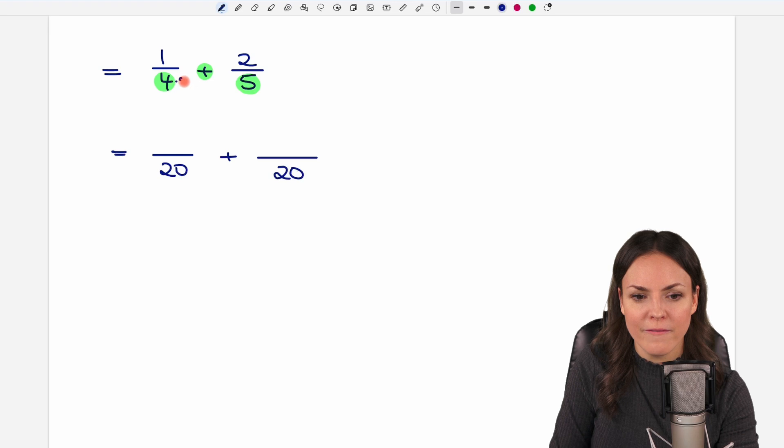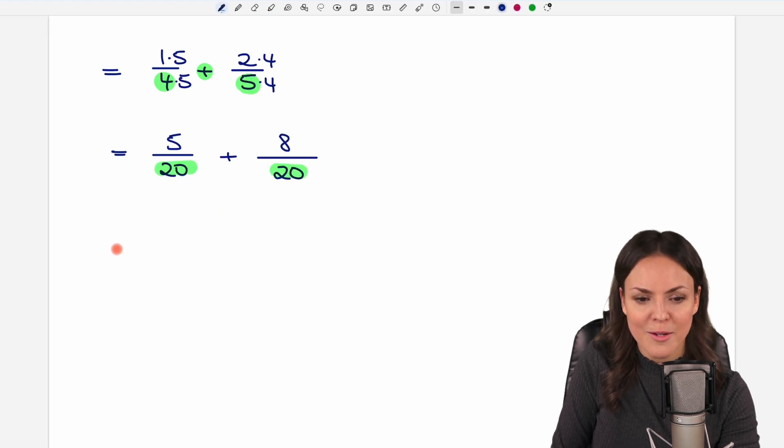Here we have to multiply by 5 and also in the numerator, so 1 times 5 equals 5. And here we have to multiply by 4, also here, so 2 times 4 equals 8. Now the denominators are the same. We are allowed to add these two fractions. The denominator stays the same and on top we have 5 plus 8 equals 13.